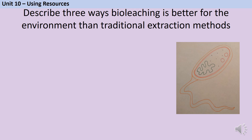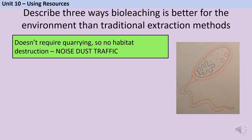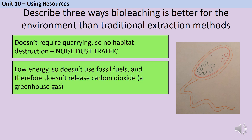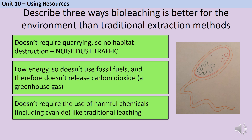What about bioleaching? Can you give three reasons why bioleaching is better for the environment than traditional extraction methods? Firstly, there's the lack of quarrying. Bioleaching doesn't require digging a big hole and extracting big chunks of rock, so there isn't that habitat destruction, and there aren't lorries driving to and from a quarry contributing to noise, dust, and traffic. Secondly, it has very low energy use. Other extraction methods burn fossil fuels to produce heat for a furnace or generate electricity, but bioleaching doesn't, so it doesn't contribute to the release of carbon dioxide, a greenhouse gas. Finally, traditional leaching uses harmful chemicals including cyanide, and bioleaching doesn't need any of that, so it doesn't contribute to poisoning the environment.